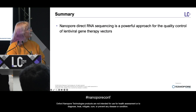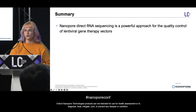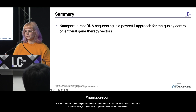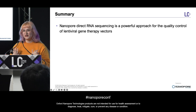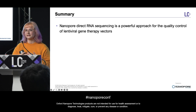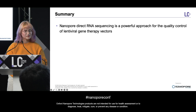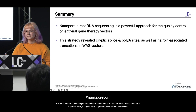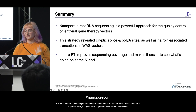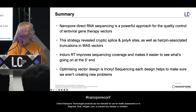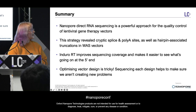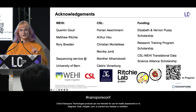To quickly sum up: nanopore direct RNA sequencing is a really powerful approach for quality control of lentiviral gene therapy vectors — and really any lentivirus in general. Especially with the increased throughput of the new RNA 004 kit, the cost is coming down to the point where you could start to sequence lentiviruses used in the lab routinely. We're already starting to sequence some lentiviruses used for CAR T cell production. Using direct RNA sequencing we're able to find cryptic splice and poly A sites as well as hairpin-associated truncations in our vectors, and the Enduro RT really helps us get a better understanding of what's happening at the five prime end. We tried optimizing our vectors with this information but found it was a lot more difficult than previously thought — so we really recommend sequencing every new vector design from now on. We do have a pre-print available if you want more information.